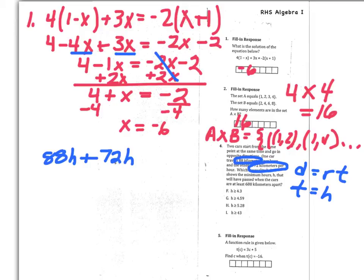So that's distance of the first car, 88h, plus the distance of the second car, 72h. And I want to know when their distance away from each other is at least 688 kilometers. So that's greater than or equal to 688.